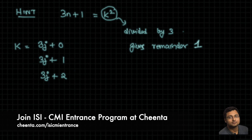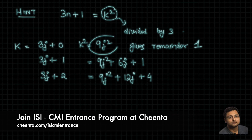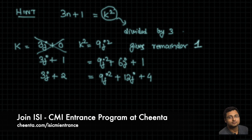If you square each case: in the first case (k = 3j) you get k² = 9j², which gives remainder 0 when divided by 3. In the second case (k = 3j + 1) you get 9j² + 6j + 1, and in the third case (k = 3j + 2) you get 9j² + 12j + 4. Since k² must give remainder 1, k is clearly not a multiple of 3, so the first case is not applicable.